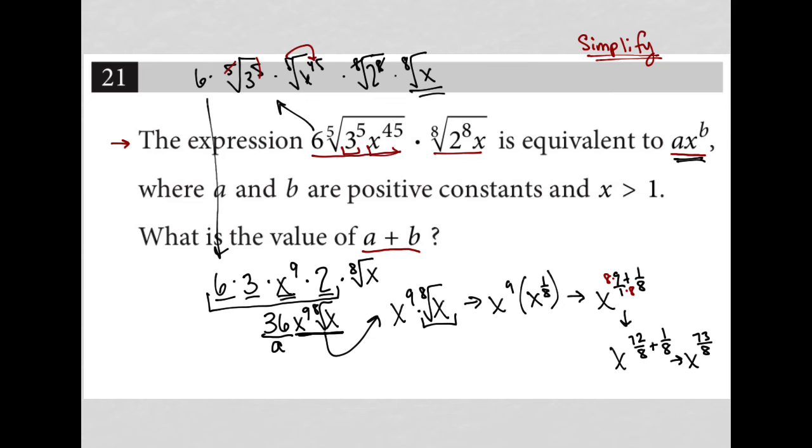Putting everything together, I have 36x to the 73/8 power, in which case my a value is 36 and my b value is 73/8. The question asks for a plus b, so I'm going to add that together now.